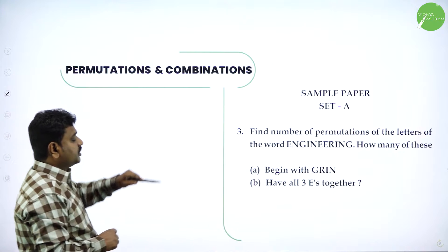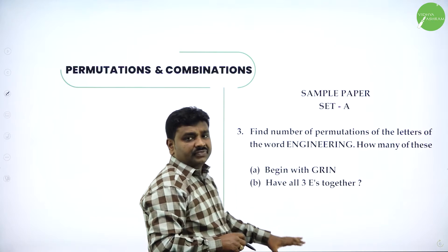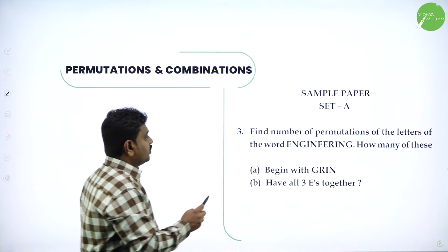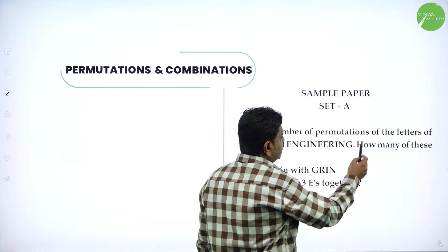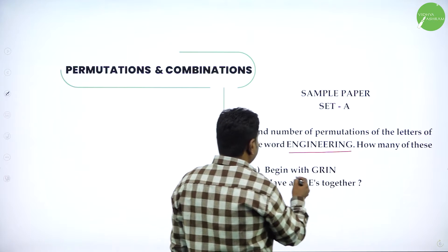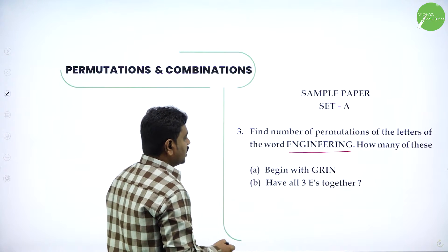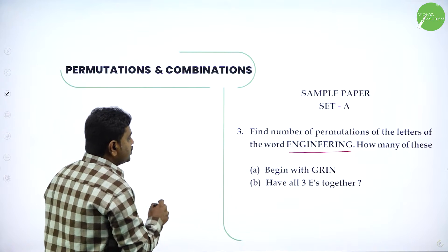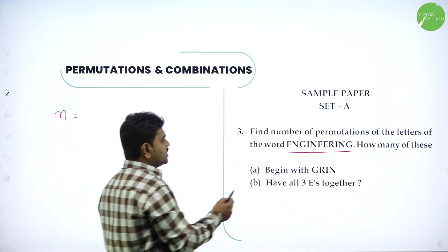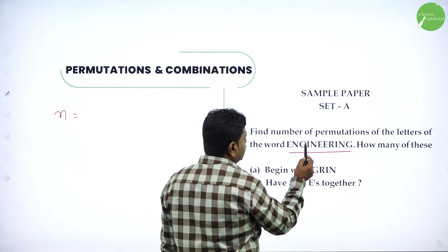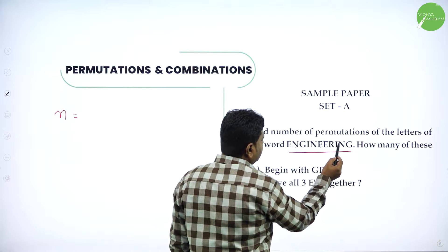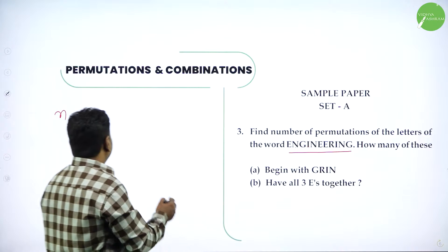Then you'll have one more question — a three-marker. Find the number of permutations of the letters of the word engineering. How many begin with G, R, I, N? In engineering, the number of letters is 11. We have 3 E's, which are repeated.